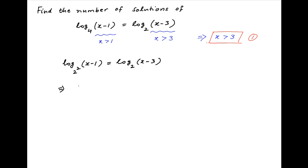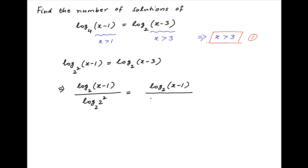Using properties of logarithms, the left hand side can be written as log of (x minus 1) to the base 2 divided by log of 2 squared to the base 2. This simplifies to log of (x minus 1) to the base 2 divided by 2 times log of 2 to the base 2. Since log of 2 to the base 2 is equal to 1, the left hand side simplifies to half of log of (x minus 1) to the base 2.